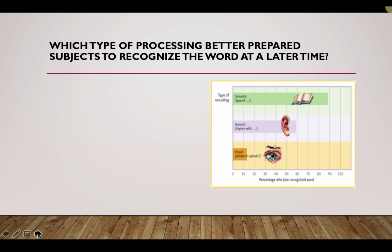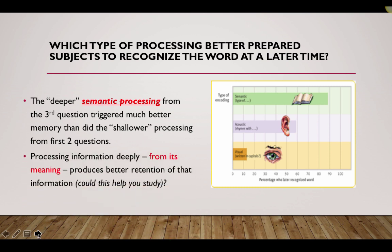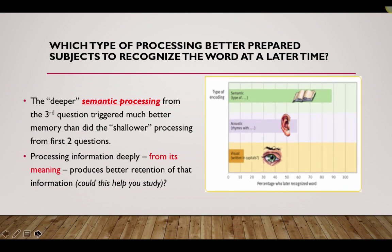Now, what they did find was that the deeper processing question, the semantically processed third question, triggered much better memory than did the shallower processing first two questions. By processing information deeply from its meaning, it produces better retention. Now, how could this help you study? When you learn a new term or a new concept, can you mentally relate it to other concepts that you know? Can you explain it to somebody else? Can you process it in a different way? And this tends to lead to much better retention.